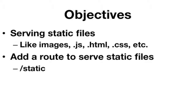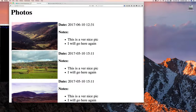Handling static files is slightly different — we don't want to create a route for every single file. What we want to do is say we have a route that is going to serve up things from a directory. The HTTP package already provides us an implementation of a file server — it's actually called FileServer — and so we're going to see how to use that in this section.